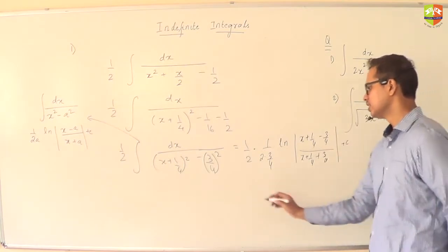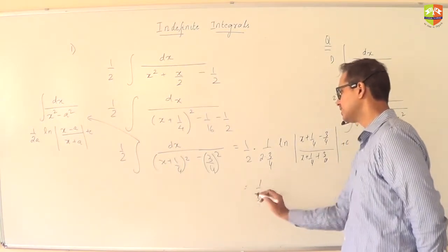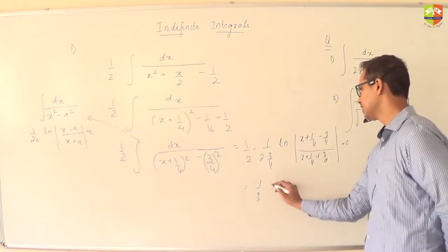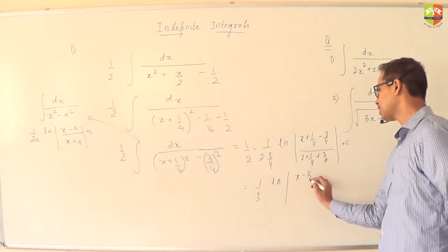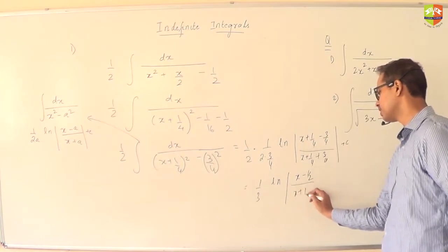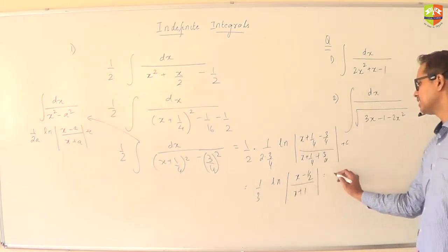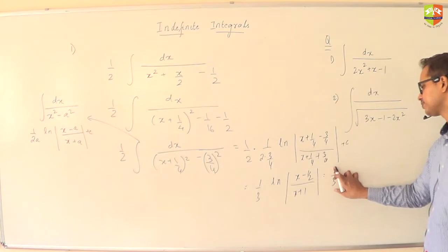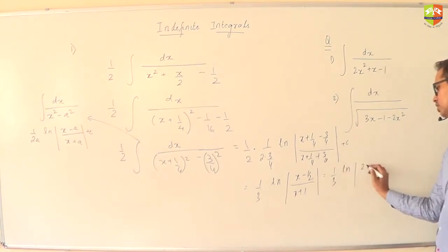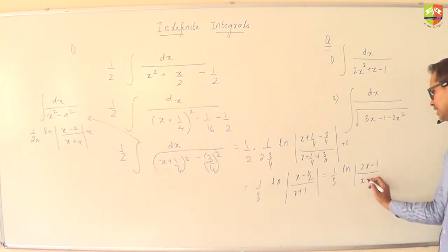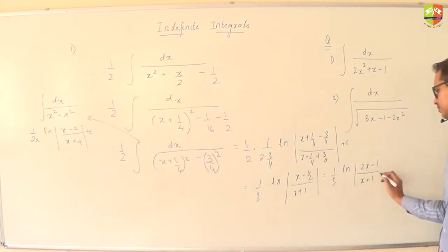So it basically becomes 1 by 3, ln x minus a half by x plus 1, which can be written as 1 by 3, ln 2x minus 1 by x plus 1. Plus, ln of 2 can be written as 1 by 2.